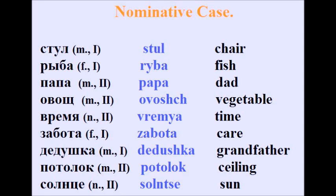Now it's time to look at the nouns in singular form in nominative case. Remember that it's the same form of all the nouns that you can find in a dictionary of Russian language. Examples: стул, рыба, папа, овощ, время, забота, дедушка, потолок, солнце.